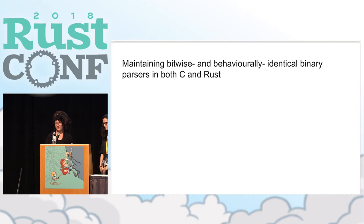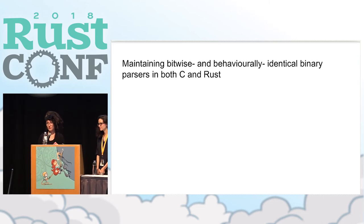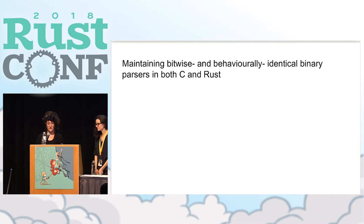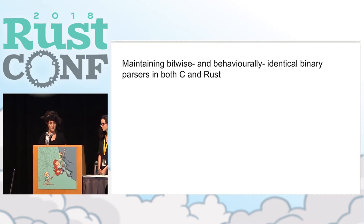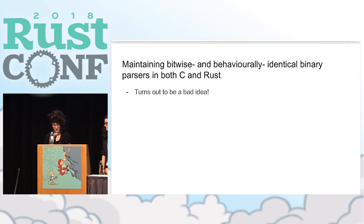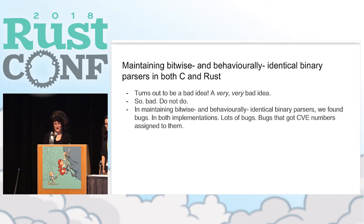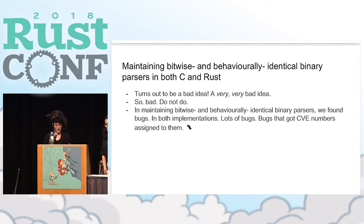We thought we'd go further and, as Chelsea mentioned, not just wrap the C code, but maintain two implementations of a bitwise and behaviorally identical binary parser in both C and Rust at the same time. This was largely because we weren't quite ready to say we're doing Rust and can ditch the C. This turns out to be a really, really bad idea. In maintaining this behaviorally identical binary parser, we found bugs in both implementations — lots of bugs — and some of the bugs got CVE numbers assigned to them.